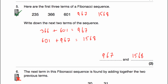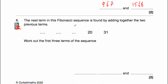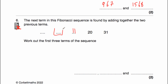Let's have a look at our next question, question number six. Question number six is a bit different, because what we've actually been given is the fourth term and the fifth term, and we've got to work out the three terms before those — the first three terms of the sequence. So to get this 31, we would have added together this number and our 20. This number plus 20 is equal to 31, so this number must be 11. To get our 20, this number plus 11 is equal to 20, so this number has to be 9. And finally, to get our 11, this number and 9 is equal to 11, so this number would be 2. Let's just check: 2 plus 9 is equal to 11, 9 plus 11 is equal to 20, 11 plus 20 is equal to 31. So the first three terms of our sequence were 2, 9, and 11.